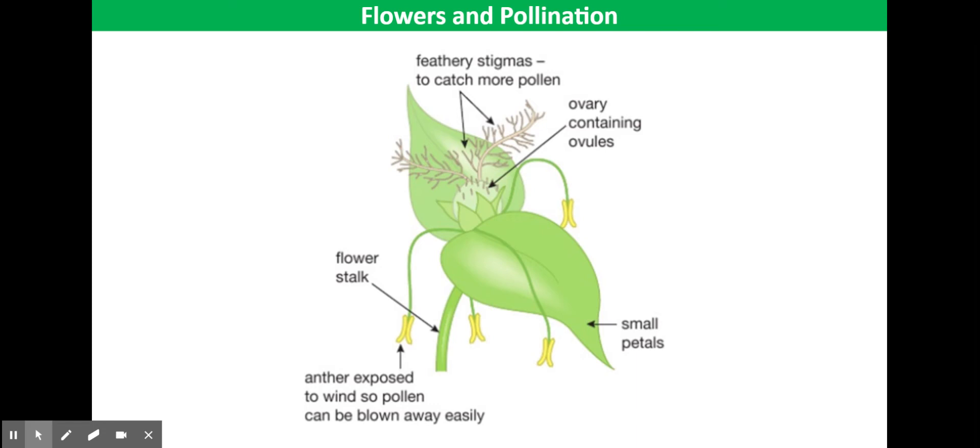The anthers that produce the pollen are loosely attached to long filaments outside of flowers to easily release pollen by the wind. The stigma is feathery and outside the flower to catch drifting pollen grains.